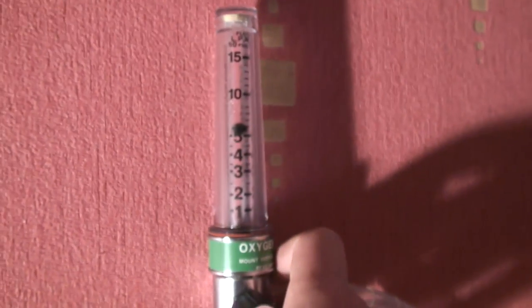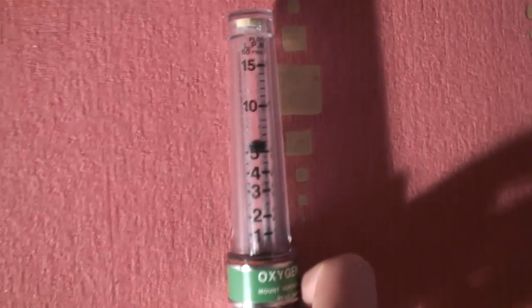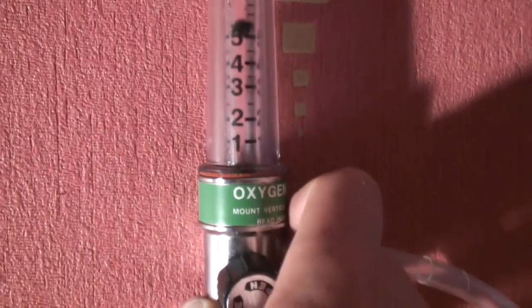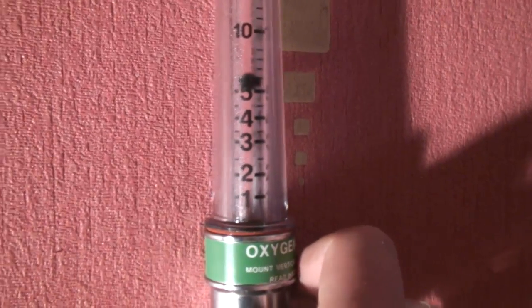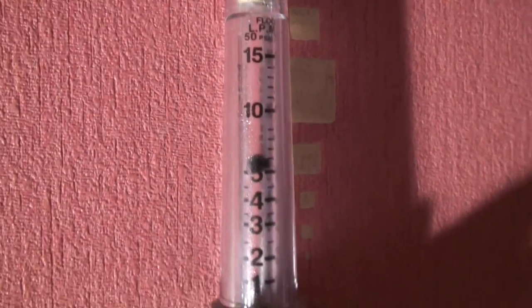You can see it jump. Oxygen flow meter can measure up to 15. Look at that, it's producing 6 liters per minute right now.